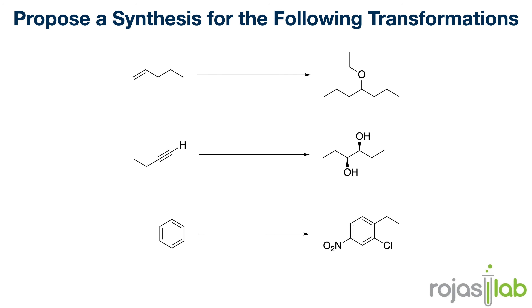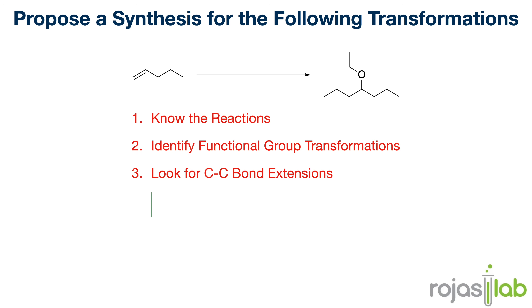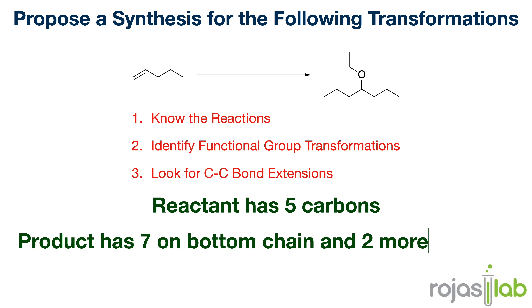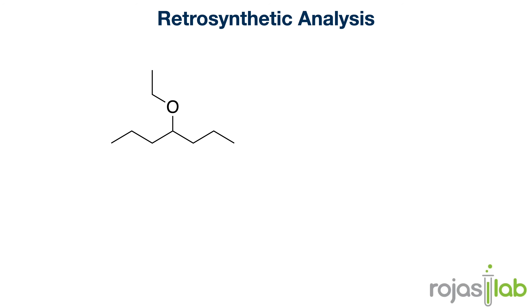Now let's see if you can put it all together with these practice problems. We definitely have some functional group transformations because we start with an alkene and end with an ether. Additionally, we need to extend our carbon chain — our alkene contains six carbons, which means we need to add two additional carbons to the end of that chain. There are only a few reactions that achieve extending carbon-carbon bonds, and a Grignard reagent is going to be very useful. Using retrosynthesis, I know that I can make our final ether product by substituting an alcohol with an alkyl halide, so the step before forming our final product must have been that substitution reaction.